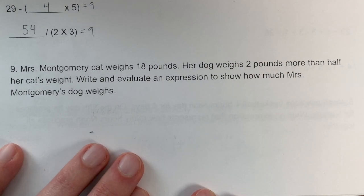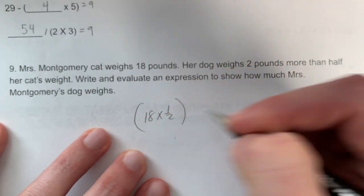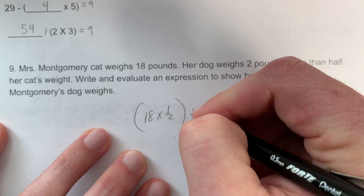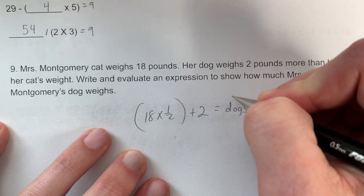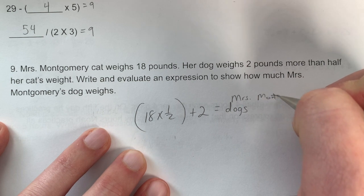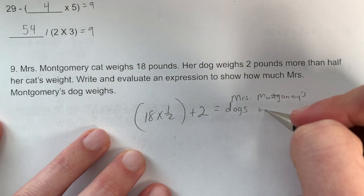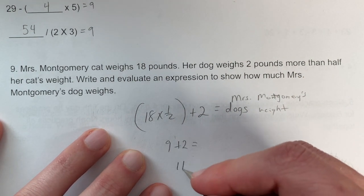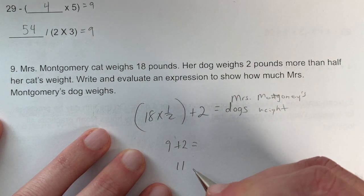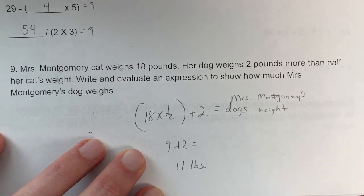Problem 9: Miss Montgomery's cat weighs 18 pounds. Her dog weighs 2 more than half the cat's weight. First, find half the cat's weight: 18 × 1/2, then add 2: (18 × 1/2) + 2 equals the dog's weight. 18 × 1/2 = 9, and 9 + 2 = 11. Miss Montgomery's dog weighs 11 pounds.